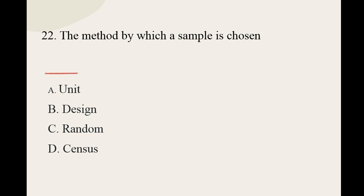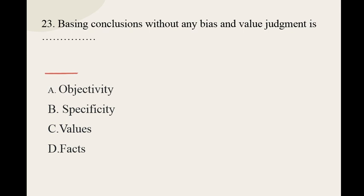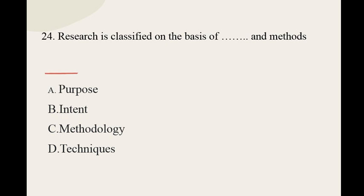Question number twenty-two: The method by which a sample is chosen is called — options are unit, design, random, and census. The correct option is design. Question number twenty-three: Basing conclusions without any bias and value judgment is — options are objectivity, specificity, values, and facts. The correct option is objectivity. Question number twenty-four: Research is classified on the basis of — options are purpose, intent, methodology, and techniques. The correct option is intent.